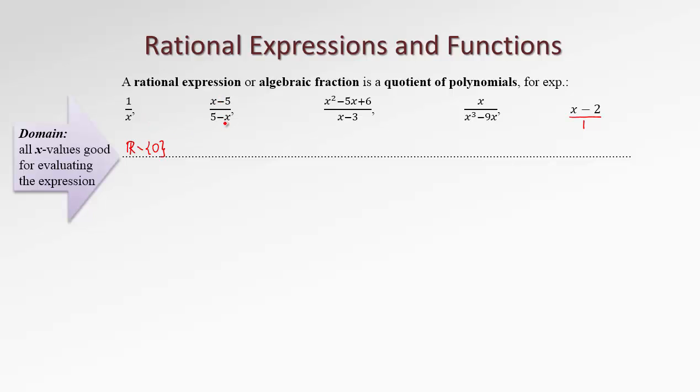Let's look at the second example. Here, the trouble x value is five, because if we replace x by five, the denominator becomes zero. Therefore the domain of this expression is all real numbers, but not five. In the next example, you can probably see it already, x can't be three. So the domain is all real numbers, but not three.